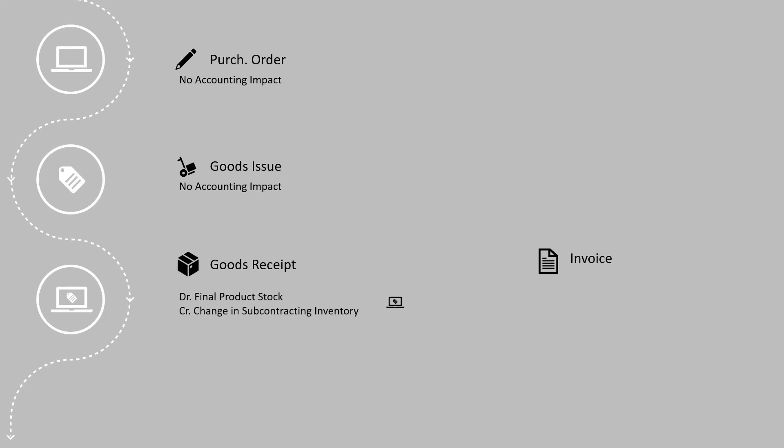Once we post the goods receipt, the stock of the final product which we are receiving from the vendor is debited and the subcontracting inventory change account is credited. This is for the final product that we are receiving after the value addition from subcontracting. For the raw material that has been used in this process, the raw material consumption account is debited and the raw material stock account is credited. Like every other goods receipt, the GRIR account is credited and the subcontracting charges account is debited.